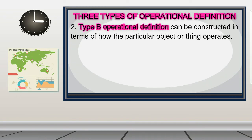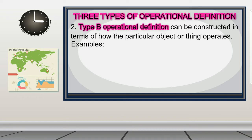Type B operational definition can be constructed in terms of how the particular object or thing operates. For example: 'Monitor is a television receiver used in a studio to select or verify the picture being broadcast from a particular camera.' 'Keyboard is a set of keys on a piano or similar musical instrument.'